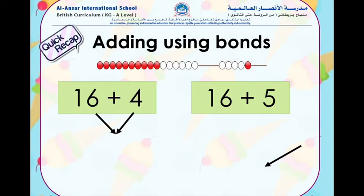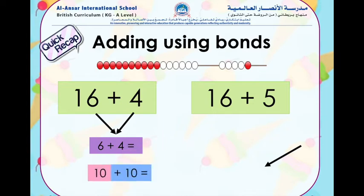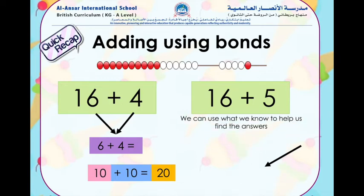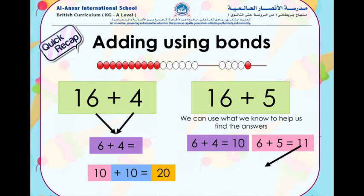Let us recap adding using bonds. Here we have the number 16 plus 4 and 16 plus 5. We can remember our bonds of 10: 6 plus 4 equals 10. We can use this and add another 10 to it, so 10 plus 10 equals 20. Then for 16 plus 5, we can use what we already know: 6 plus 4 equals 10, so 6 plus 5 will equal 11. Then we can say 11 plus 10 equals 21.